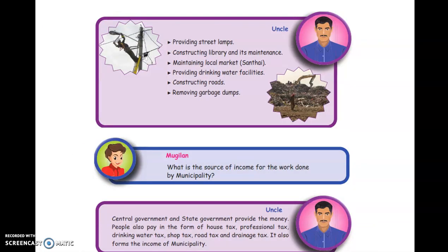Mugila, the municipality provides street lamps, constructs libraries and maintains them, maintains local markets called santhai, provides drinking water facilities, constructs roads, and removes garbage dumps.